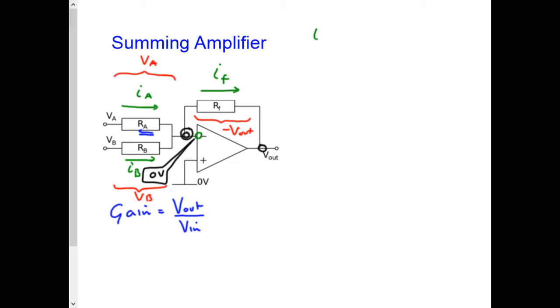Kirchhoff's Law tells me that IF must equal IA plus IB. Current is conserved at this junction here, so this current adds up with this current to give the feedback current. And remember, no current flows into the inverting input.